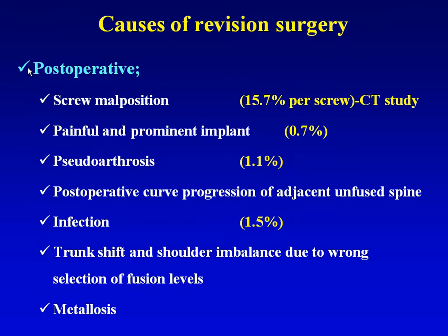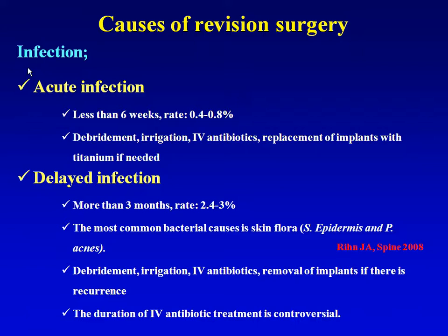Post-operative causes of revision surgery include screw malposition — rate more than 50% with CT study. Infection can be divided into acute and late infection. Treatment of acute infection includes debridement, irrigation, IV antibiotics, and if there is recurrence, removal and replacement of implant with titanium if needed. The most common bacterial cause is skin flora such as Staphylococcus epidermidis in delayed infection. Treatment of delayed infection includes debridement, irrigation, IV antibiotics, and removal of all implants if there is recurrence. The duration of antibiotic treatment remains controversial in delayed infection.